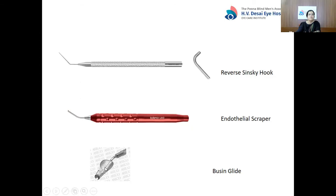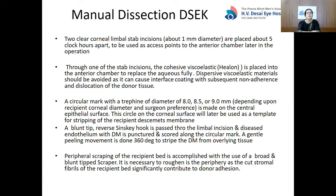Coming to a step-by-step description of the surgery — manual dissection DSAEK. Two clear corneal limbal stab incisions are placed about 5 clock-hours apart to be used as access points to the anterior chamber. Through one stab incision, a cohesive viscoelastic is placed into the anterior chamber to replace the aqueous fully. Dispersive viscoelastics should be avoided as they can cause interface coating with subsequent non-adherence and dislocation of the donor tissue. A circular mark with a trephine of diameter 8, 8.5, or 9 mm — depending on recipient corneal diameter and surgeon preference — is made on the central epithelial surface. This circular mark will serve as a template for stripping of the recipient Descemet's membrane.